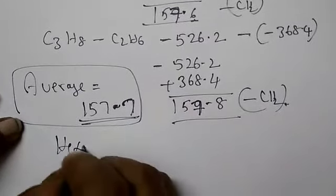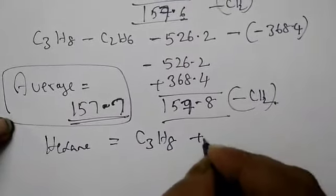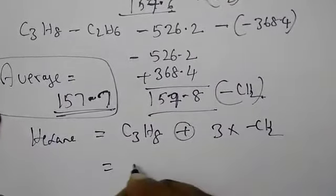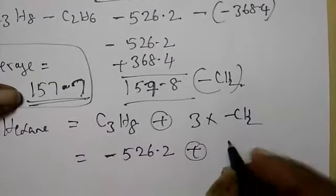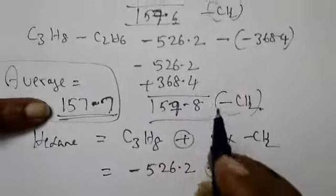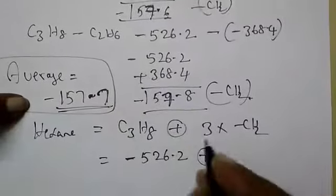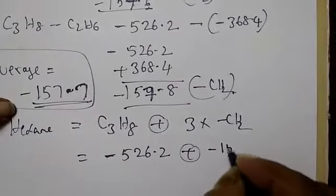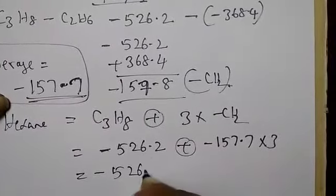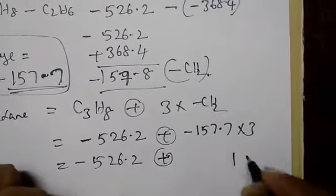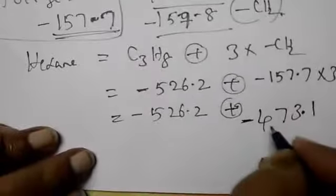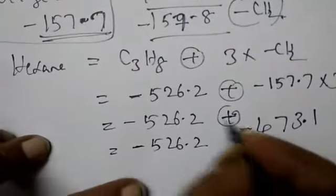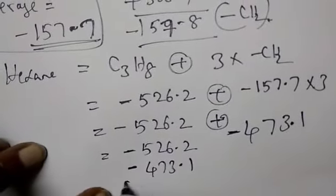Now, you want hexane. For getting hexane, you use the value of propane plus 3 values of your CH2. Your propane value data is given minus 526.2 plus your average value is 157.7. Both the category, the sign is minus. Sign is very important. Now, it is minus 157.7 into 3. Now, let us complete here. 526.2 plus. This is your values. Minus this one and here this is. Minus sign is there. Now plus into minus minus. So, next thing 526.2 plus into minus minus 473.1. Both are the same sign. So, you simply add it.